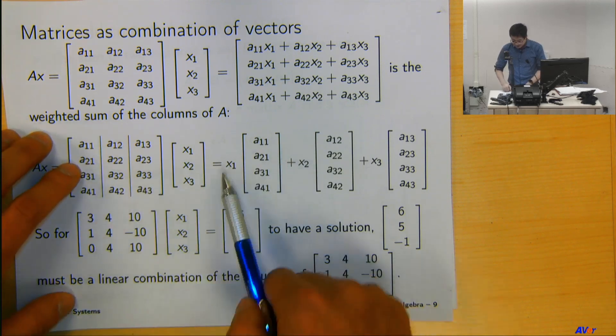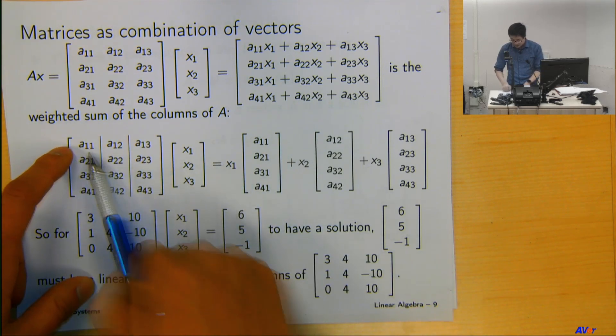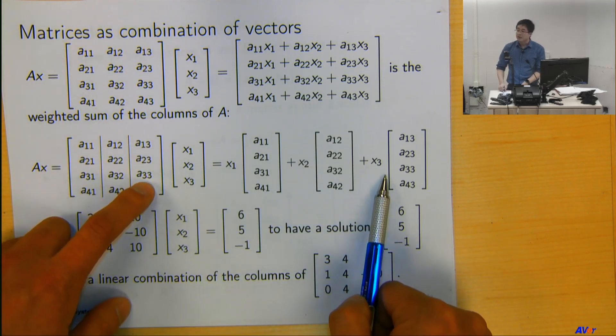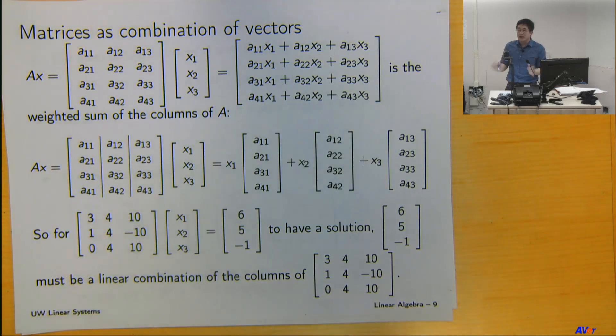So another way, it is actually x1 multiplying the first column, x2 multiplying the second column, and x3 multiplying the third column. So the result, if you have a matrix vector multiplication, is a linear combination.